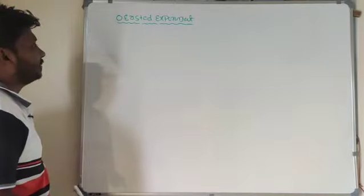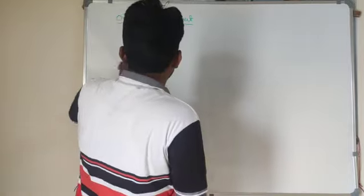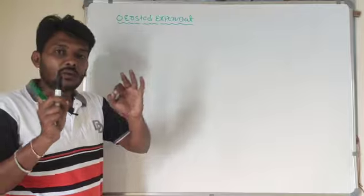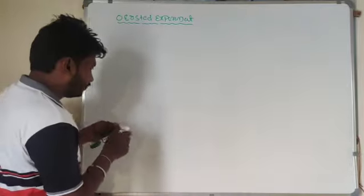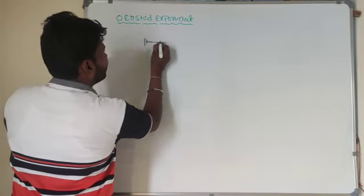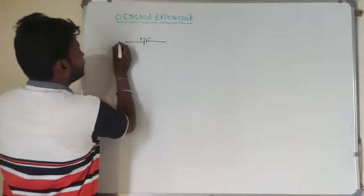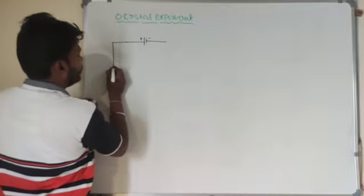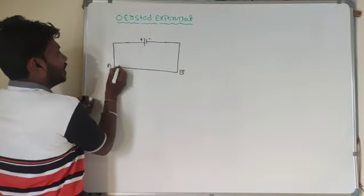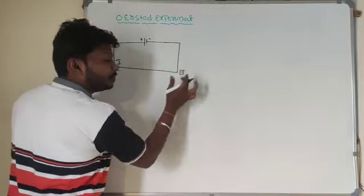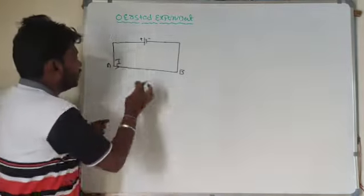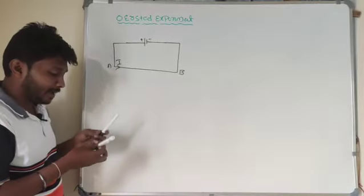To understand the Oersted experiment, he considered a magnetic needle, or magnetic compass. This magnetic compass consists of two poles — a north pole and a south pole. He took one wire connected to a battery, with a positive terminal and a negative terminal. This battery gives connection to a conducting wire, and current I is flowing from point A to point B. Nearby this conductor, he placed one magnetic needle.